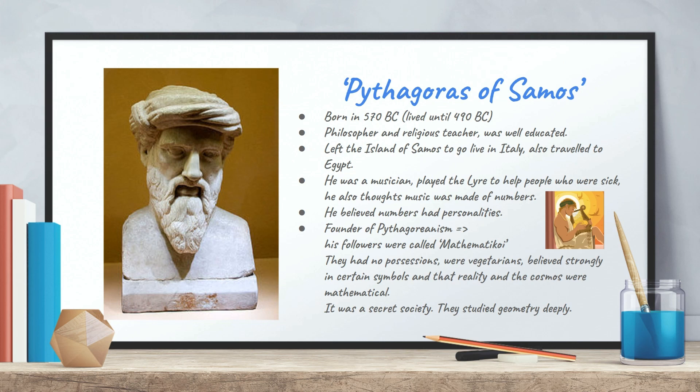And the Pythagorean secret society was called Pythagoras' semicircle, and they studied geometry and shapes deeply. So that's for your history of Mr. Pythagoras himself.